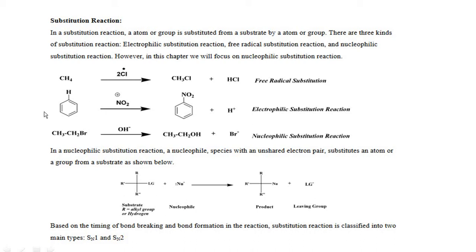Similarly, this is benzene. When a nitro group attacks as an electrophile — because it carries a positive charge — it forms nitrobenzene. This is an electrophilic substitution reaction in which the hydrogen ion is replaced by the nitro ion. Similarly, in nucleophilic substitution reaction, a negative charge replaces the leaving group. For example, Br is replaced by the OH⁻ ion. So this is known as nucleophilic substitution reaction.